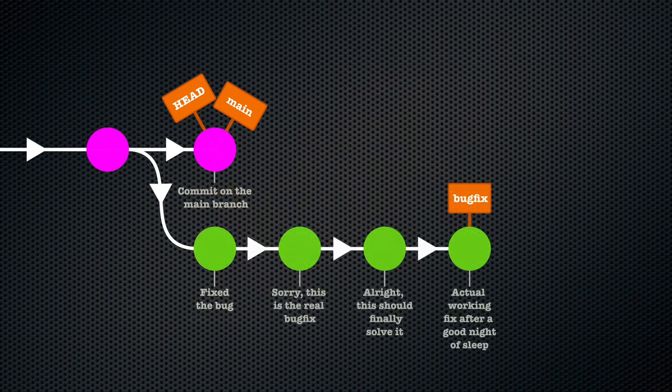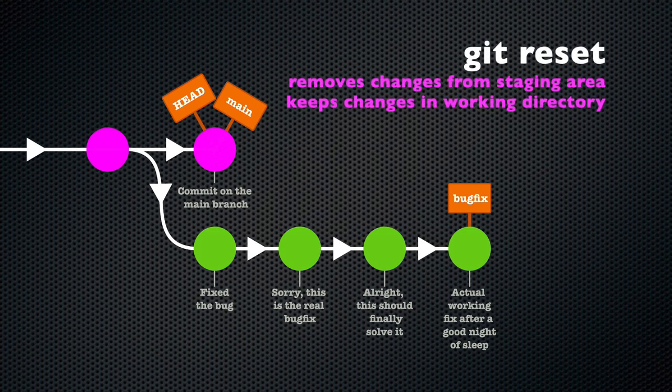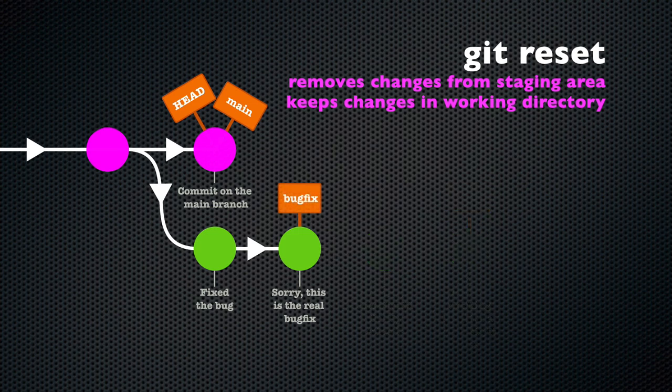You should use a --mixed reset, which is the default so you don't have to specify it, if you want the commits undone and also removed from the staging area. Perhaps you made changes that in retrospect were not a good idea. Typically this means you want to undo commits entirely.